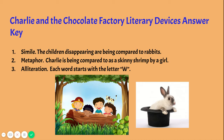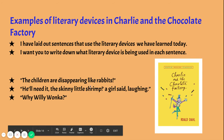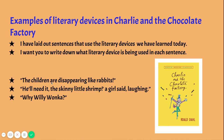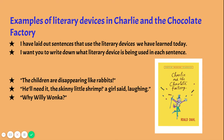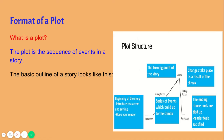Now let's go over the answers. The first sentence — 'The children are disappearing like rabbits' — uses a simile, because the children disappearing are being compared to rabbits and 'like' is connecting those two things. The second sentence — 'He'll need it, the skinny little shrimp, a girl said laughing' — is a metaphor, because Charlie is being compared directly to a skinny little shrimp without using 'like' or 'as.' The third sentence — 'Why, Willy Wonka' — is alliteration, because each word starts with the letter W.